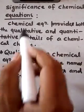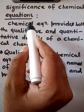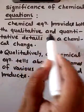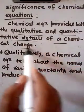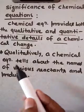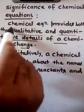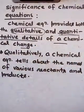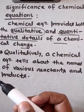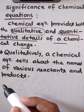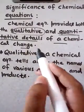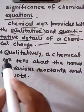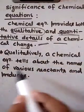In this video, we see the significance of chemical equations. A chemical equation provides both the qualitative and quantitative details about a chemical change or a chemical reaction. Qualitative means describing the nature, and quantitative means measuring amounts. A chemical equation gives the knowledge of both qualitative and quantitative details.